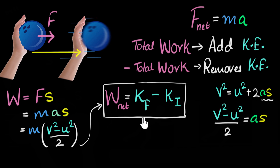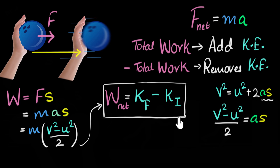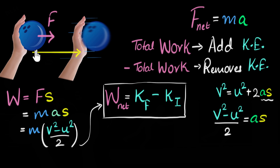In future videos we'll see that certain problems can be solved much faster using this equation rather than F = ma. To summarize: the work-energy theorem says that when you do positive work on a body, you add that much kinetic energy to the body. If you do negative work, you remove that much kinetic energy. And if there are multiple forces, calculate the total work done — that decides how much kinetic energy gets added or removed.